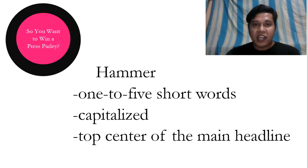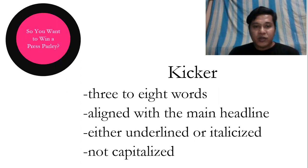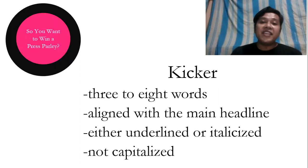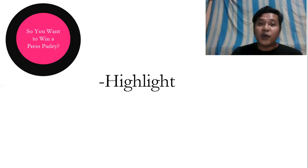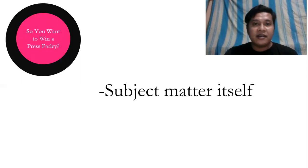In this video, I shall talk about the use of the kicker or shoulder. The kicker is composed of three to eight words. It is aligned with the main headline. It is either underlined or italicized, but unlike the hammer, it is not capitalized. The kicker may focus on the highlight of the story, the significance of the article, or simply the subject matter itself.